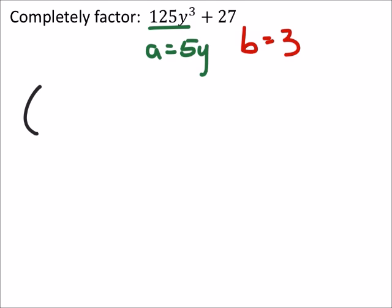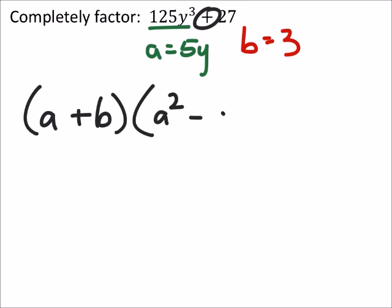So if we look at the formula, this one would be a plus b, because we've got a plus here first. And then inside, we've got a squared minus ab plus b squared.